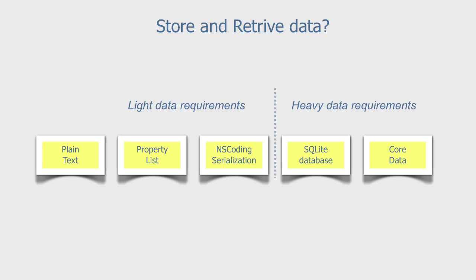Most applications need persistence, and several techniques are available. If your data requirements are light, you can use plain text files, property lists, or NS coding. If your data requirements are heavy, you can use an SQLite database or Core Data. In this tutorial we will concentrate on Core Data, but we will also compare it with SQLite.